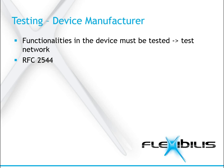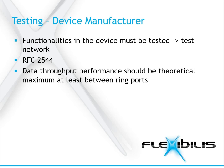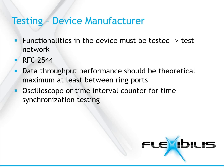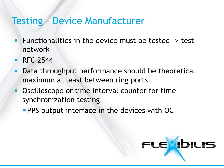As the data throughput performance of an HSR ring is the same as the throughput of the weakest performing device, the performance should be the same as the theoretical maximum at least between the ring parts. Time synchronization is most easily tested with an oscilloscope or a time interval counter if there are pulse-per-second outputs in the devices. Therefore, we would suggest implementing a PPS output interface in every device that implements an ordinary clock, at least in the device internal debug interface.